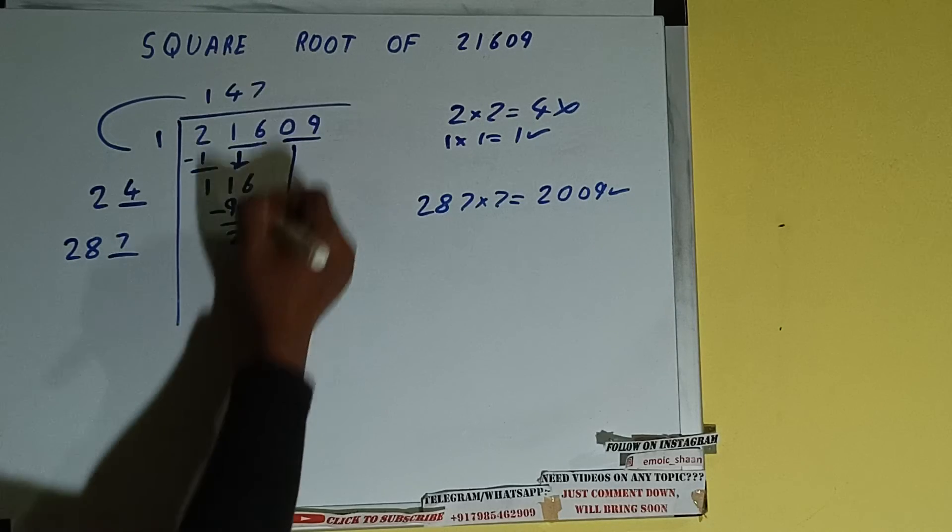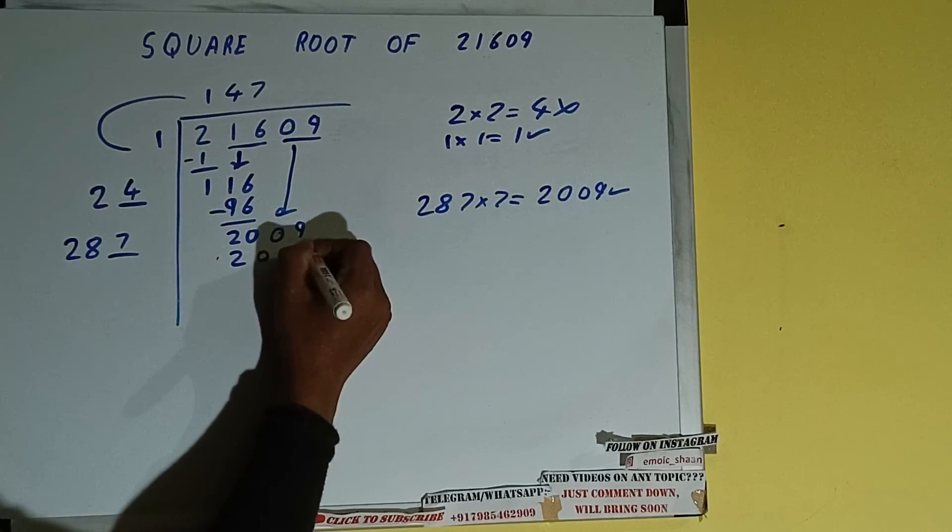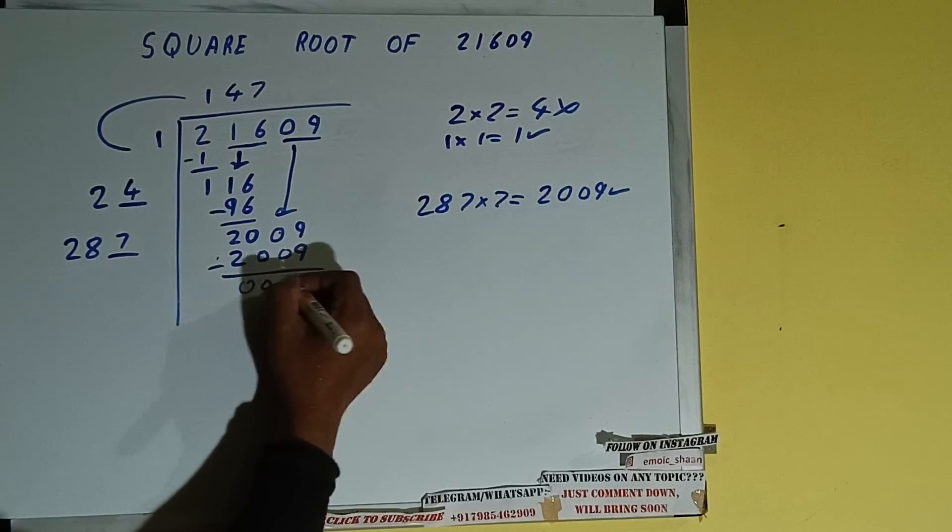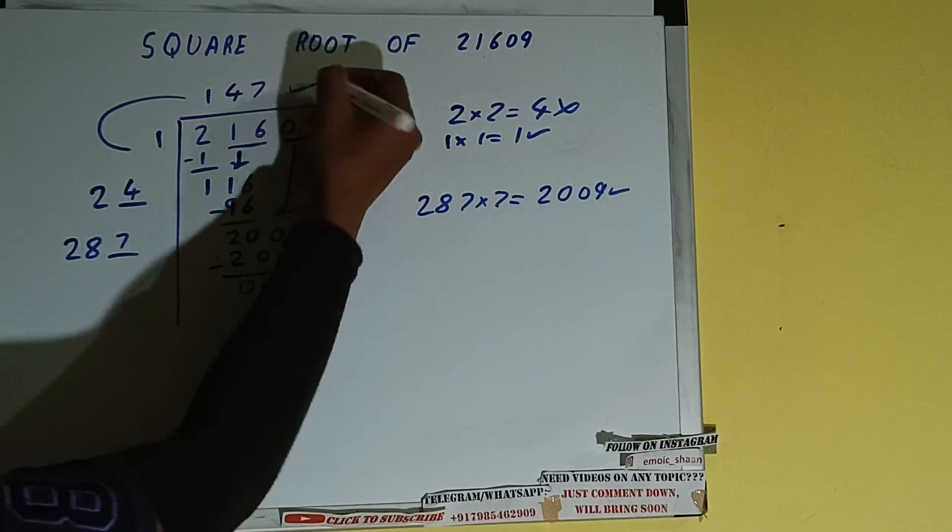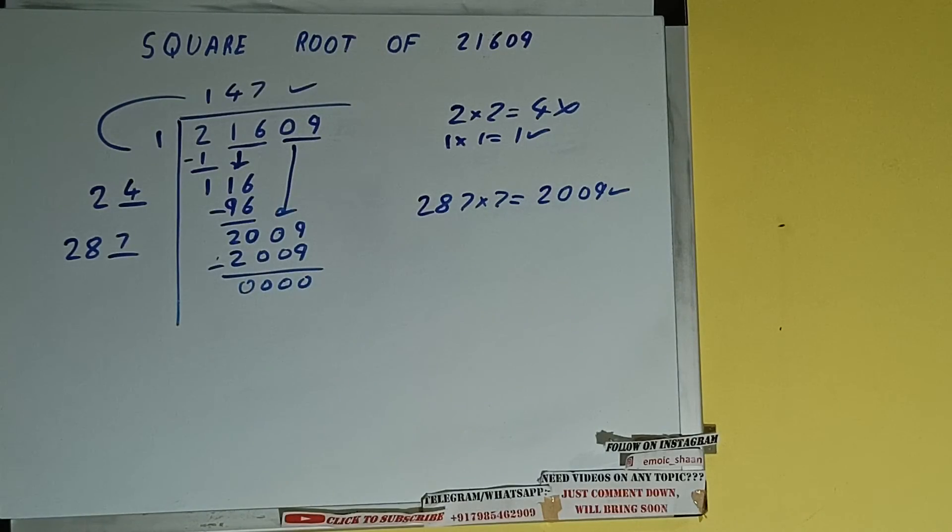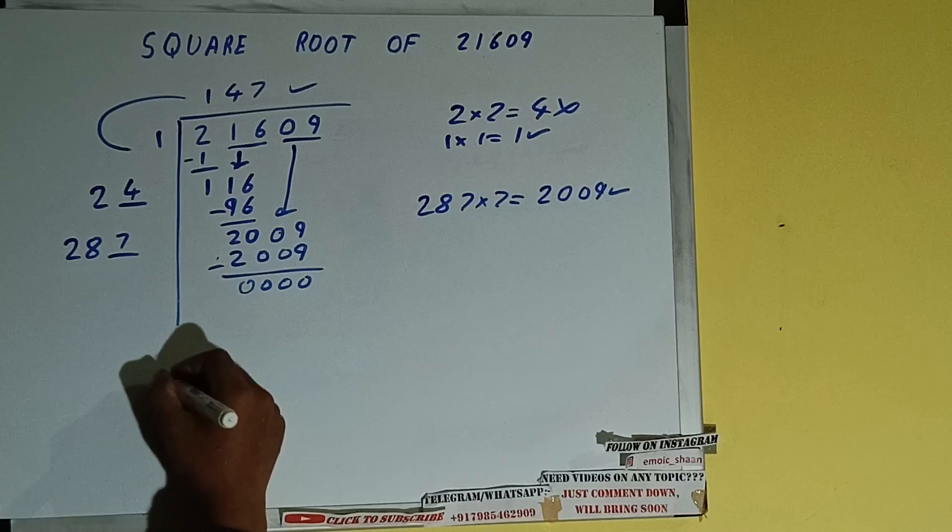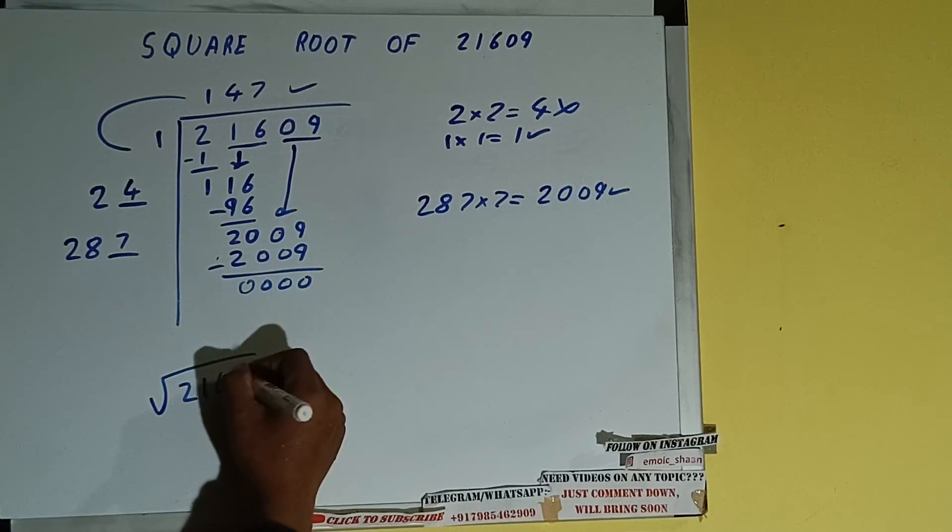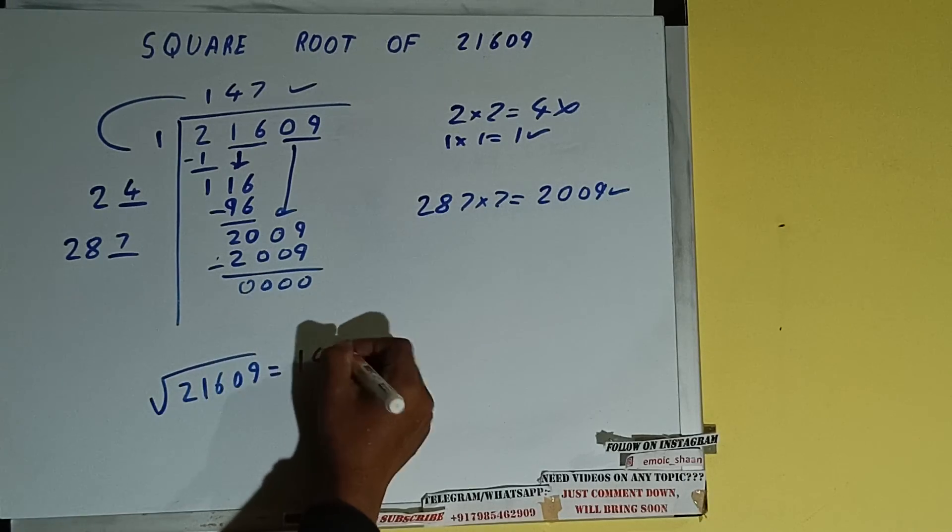2009 subtract 0 will be left. Once you get 0, whatever is in the question will be the answer, that is 147. So square root of 21609 will be 147. That's it.